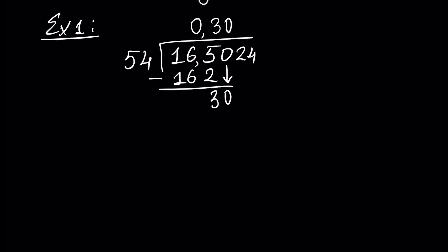Next, we write the next number, which is 2. How many 54s we have inside 302? We have 5. And 5 times 54 is 270, so we write minus 270. 302 minus 270 is 32.